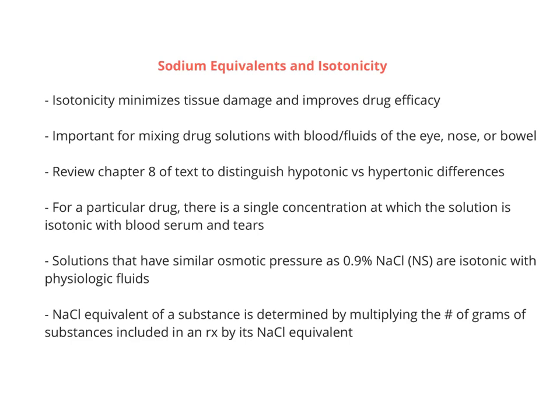there is a single concentration at which the solution becomes isotonic with blood, serum, and tears, which makes it safer and probably more effective. Solutions that have a similar osmotic pressure as 0.9% sodium chloride — what we know as normal saline — are isotonic with physiologic fluid, so this is kind of our benchmark. The sodium chloride equivalent of a substance can be determined by multiplying the number of grams of substance included in a prescription by its sodium chloride equivalent.